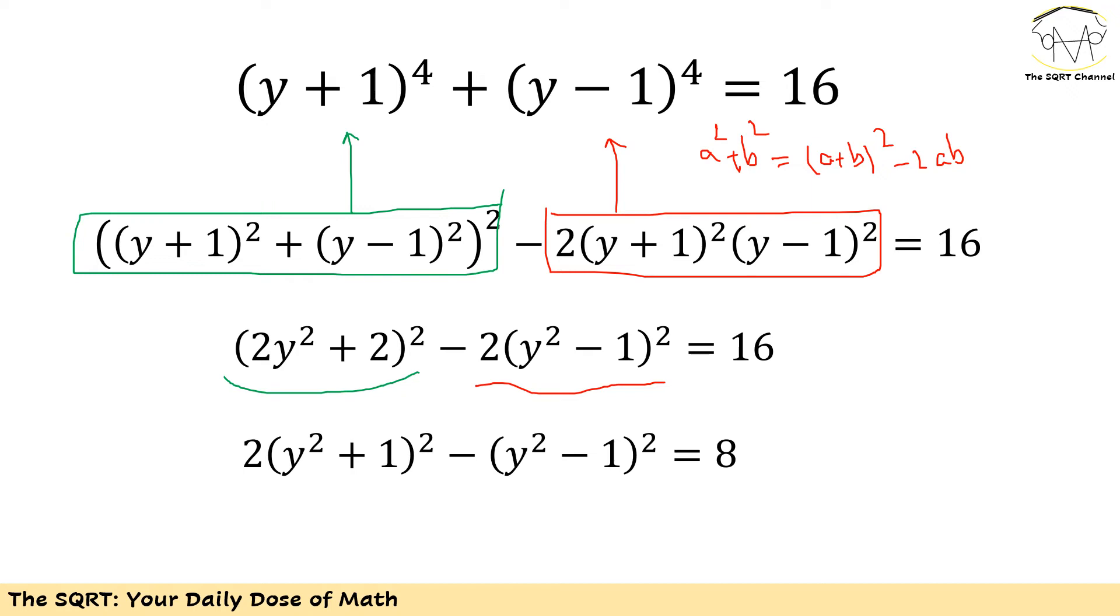The reason is simple: you can take out power of 2 from both sides, then first multiply them together and then apply power of 2. Now if we divide everything by 2, we will end up with 2(y^2 + 1)^2 minus (y^2 - 1)^2 equals to 8.